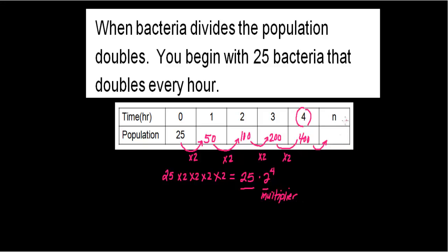And the exponent. So if I want to find an expression to find the number of bacteria at the nth hour, it's going to be 25 times 2 to the nth power. Once you have your multiplier, all you do is raise it to that variable.